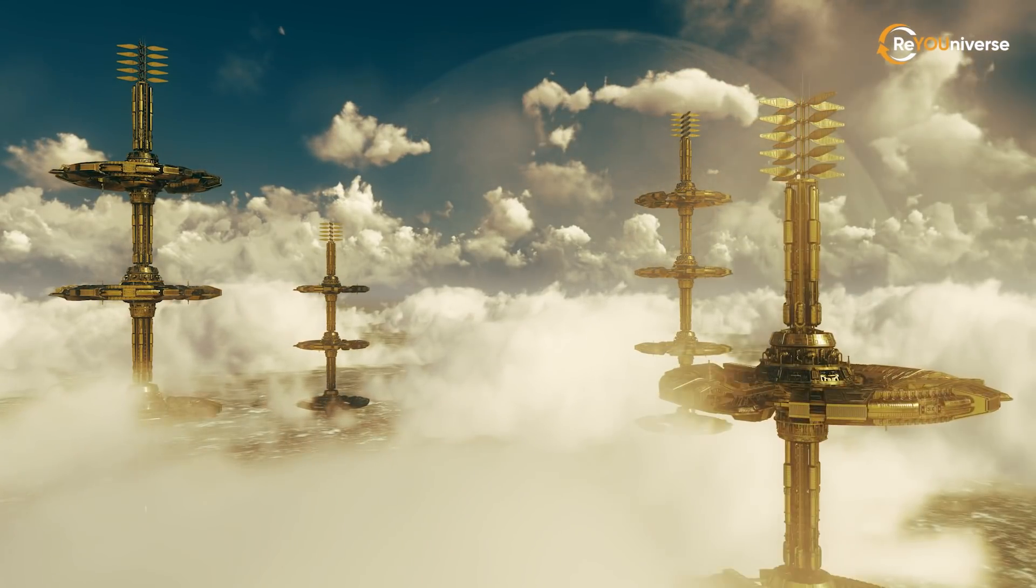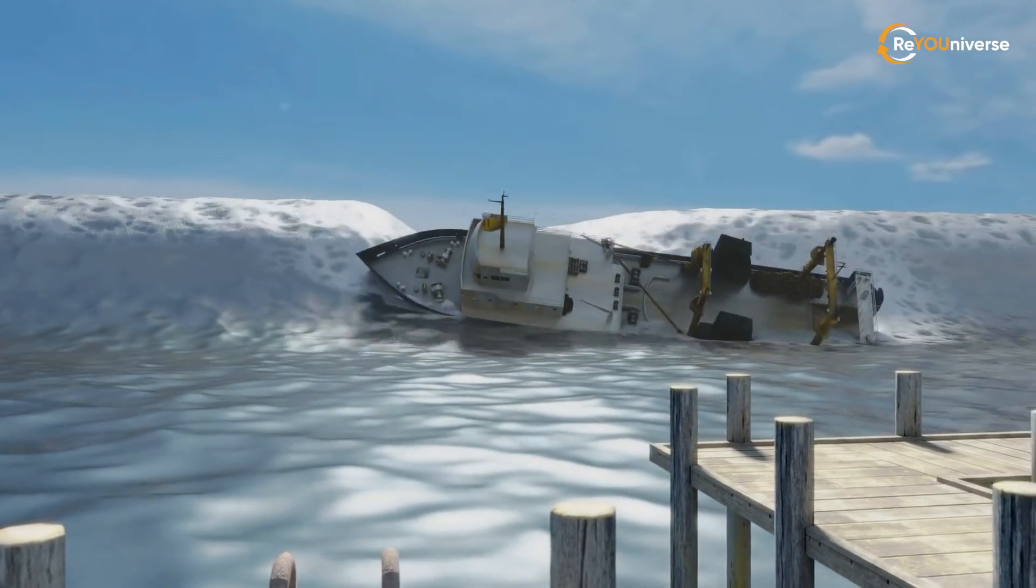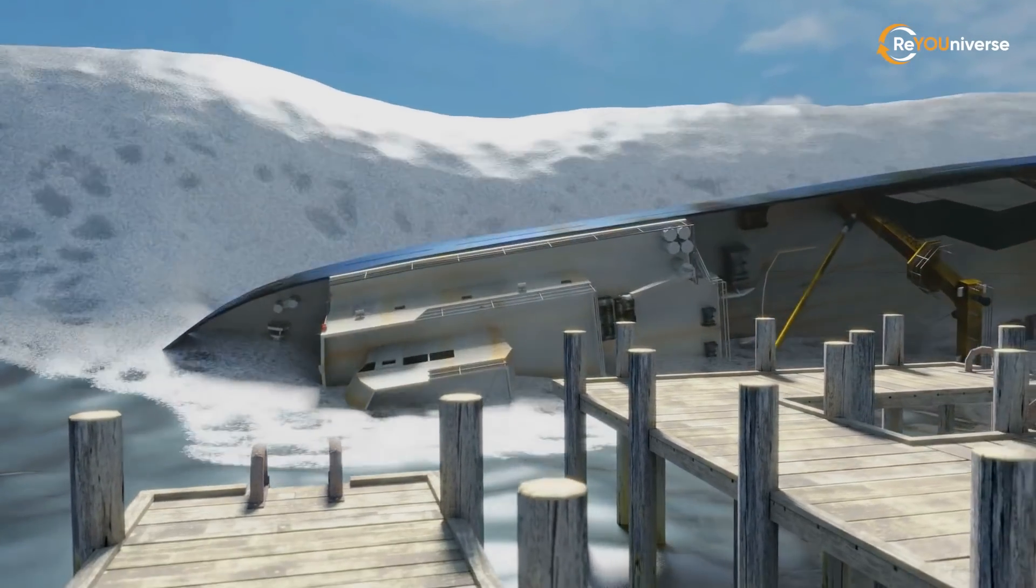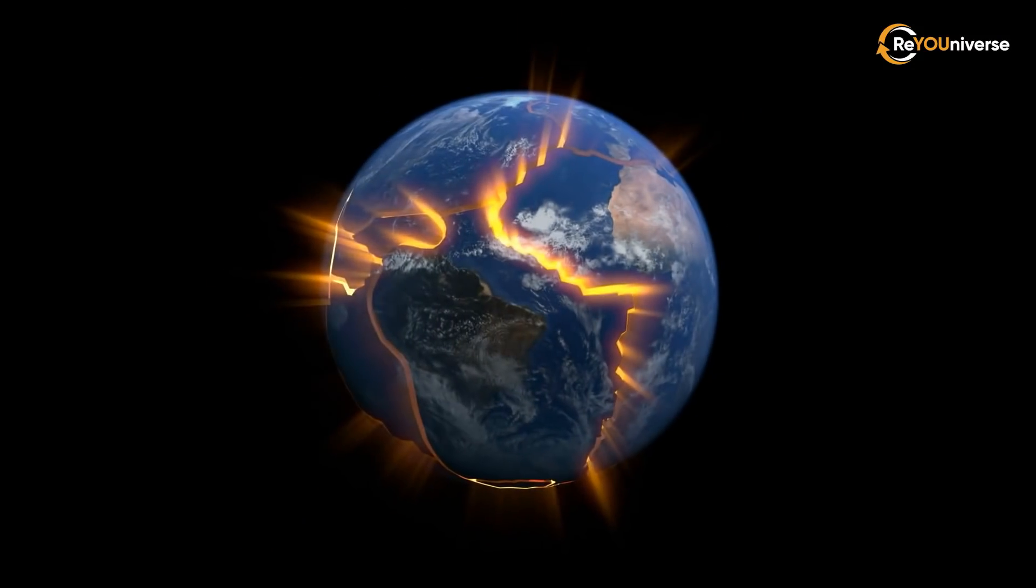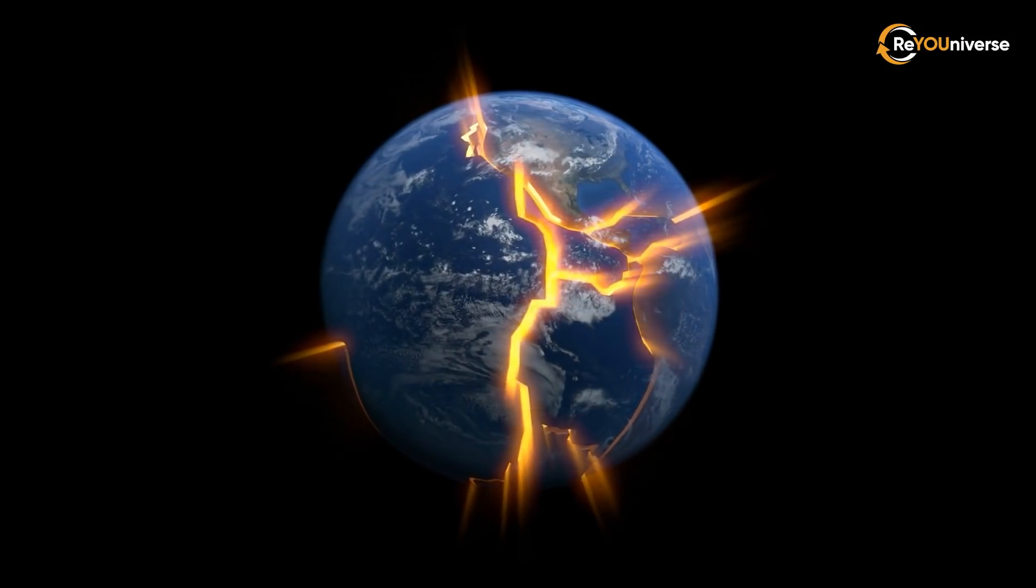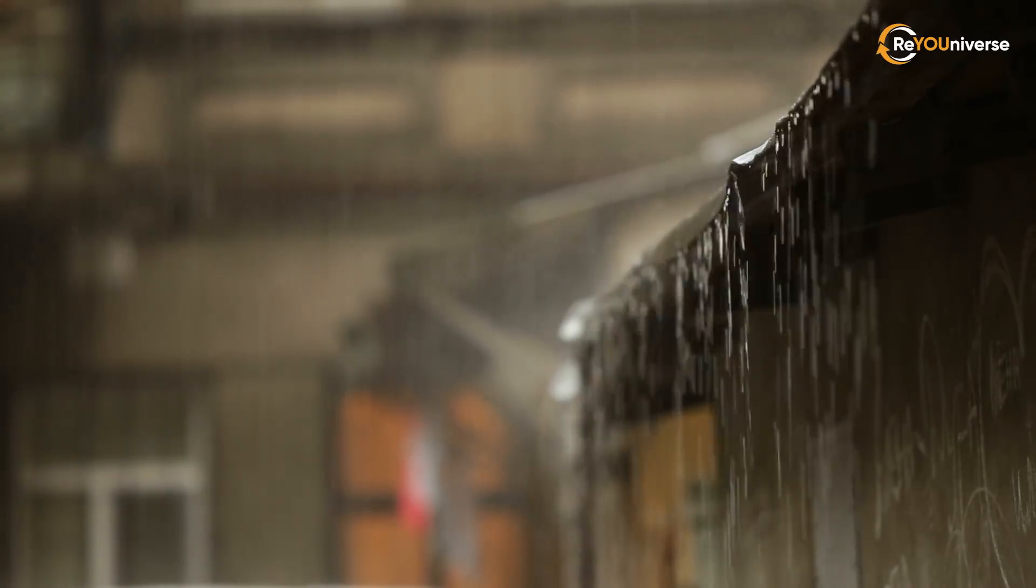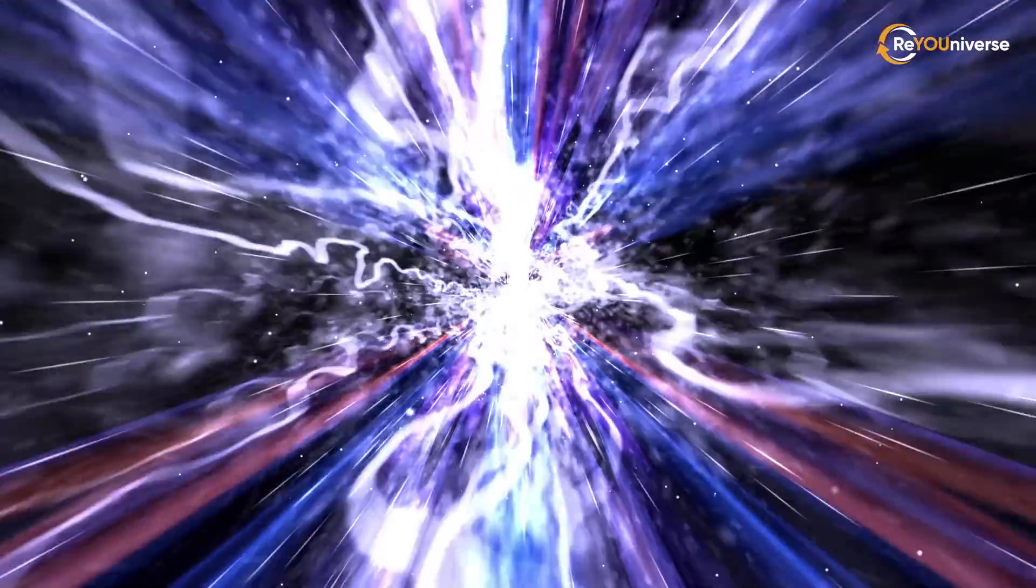Type 1 civilization is a planetary one. Imagine being able to control the weather from tsunamis to earthquakes. We would be able to get energy from everything that surrounds us,